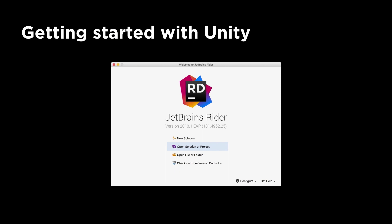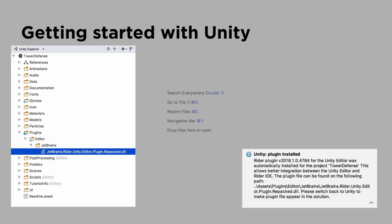As for getting started, the simplest way is to just open an existing solution. What Rider will do the very first time it opens a solution is put a plugin into your project — we drop a DLL into the plugins folder. Don't take this into source control; it's a binary file and we'll keep it up-to-date with the version of Rider you're using. Once it's there, switch back to Unity — Unity will load it, and the plugin will configure Unity for you, setting it up as the default external script editor.